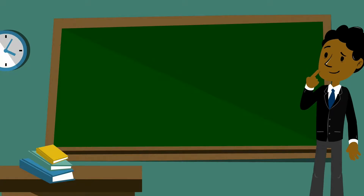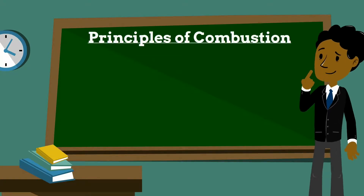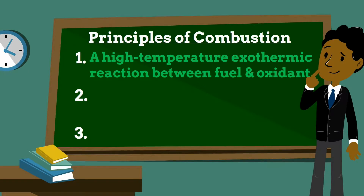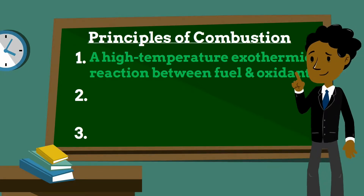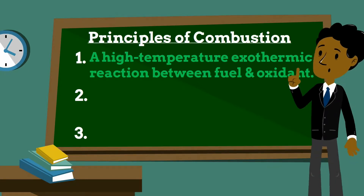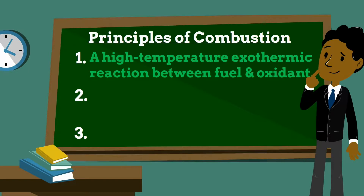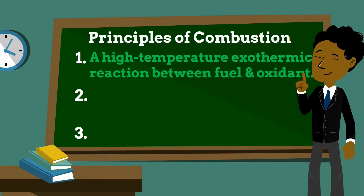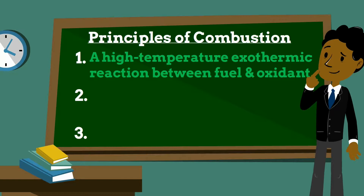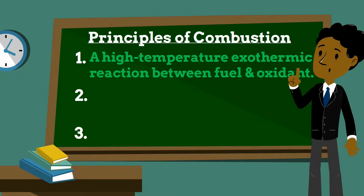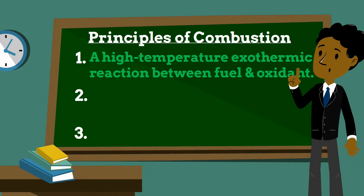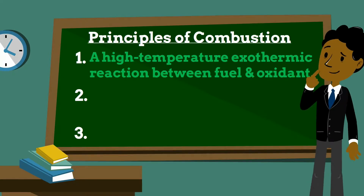Today we'll be discussing some principles of combustion. Combustion or burning is a high temperature exothermic redox chemical reaction between a fuel and an oxidant, usually atmospheric oxygen, that produces oxidized, often gaseous products in a mixture termed as smoke. Combustion in a fire produces a flame, and the heat produced can make combustion self-sustaining.